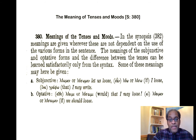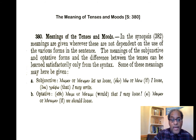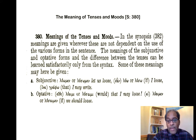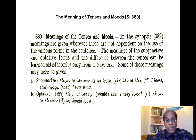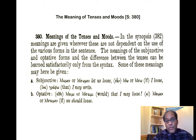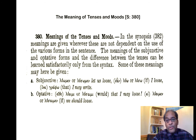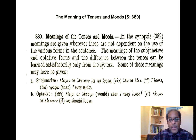Likewise, the optative — eite luoimen means 'would that we may loose,' and ei luoimen means 'if we should loose.' These are conditional and hortatory subjunctives and a whole slew of classifications that you'll learn from studying the syntax and once you actually get into literary text.